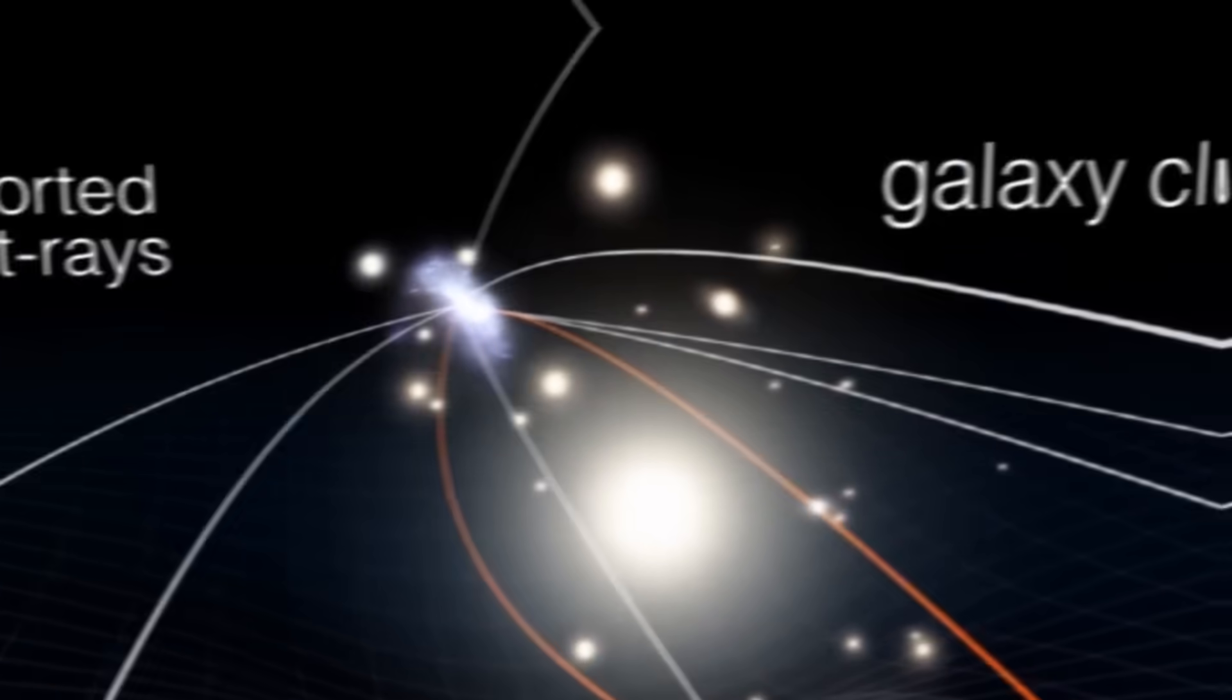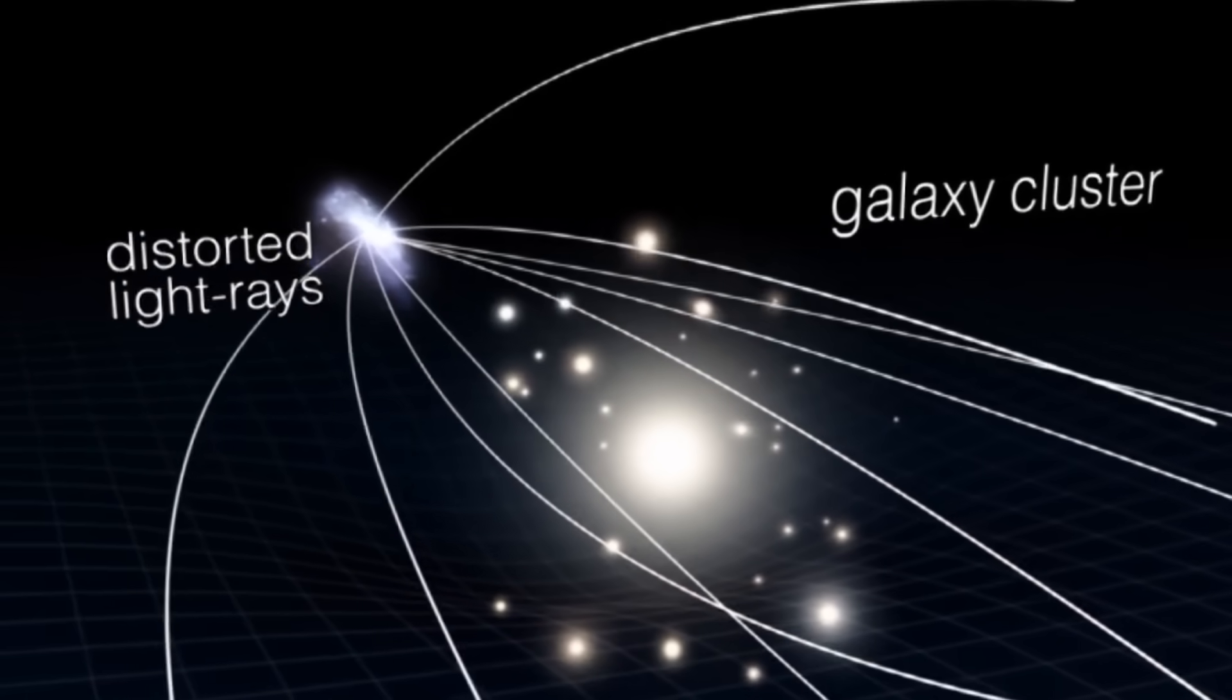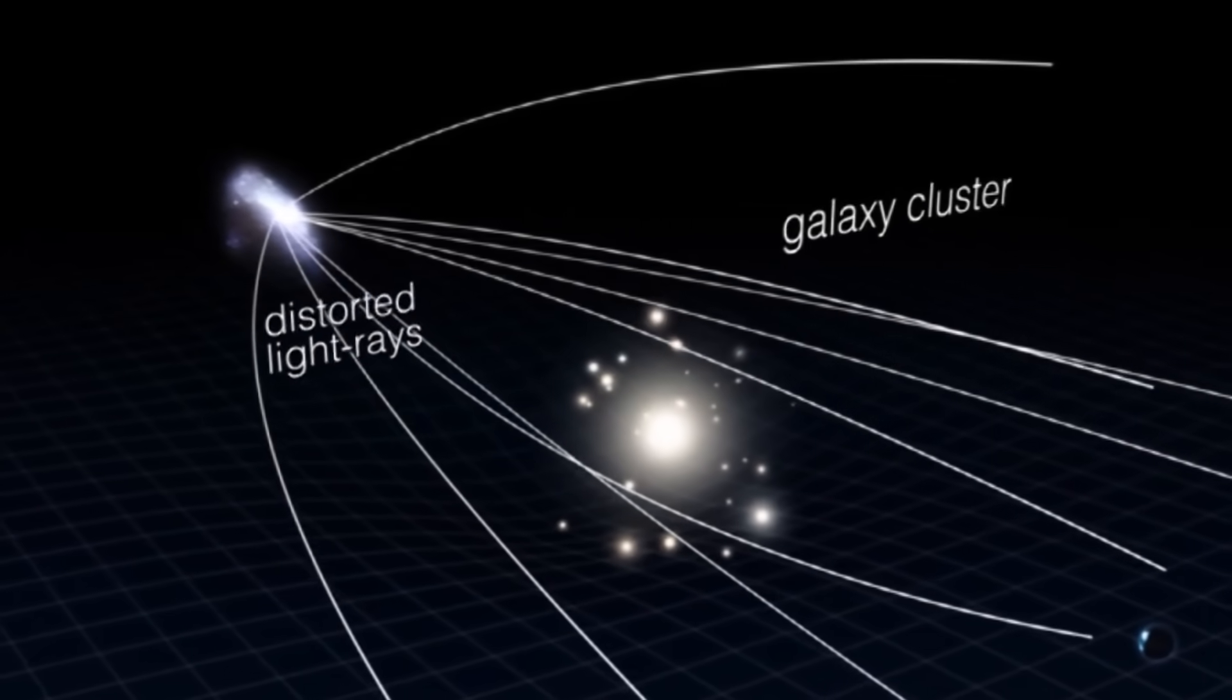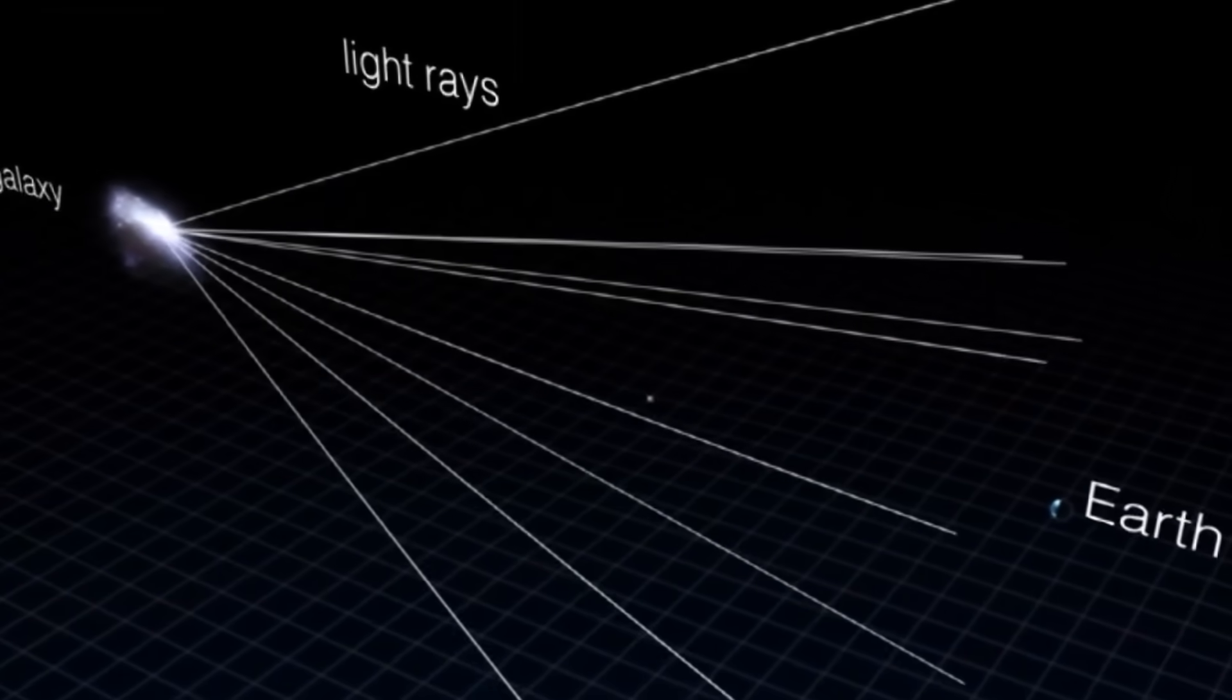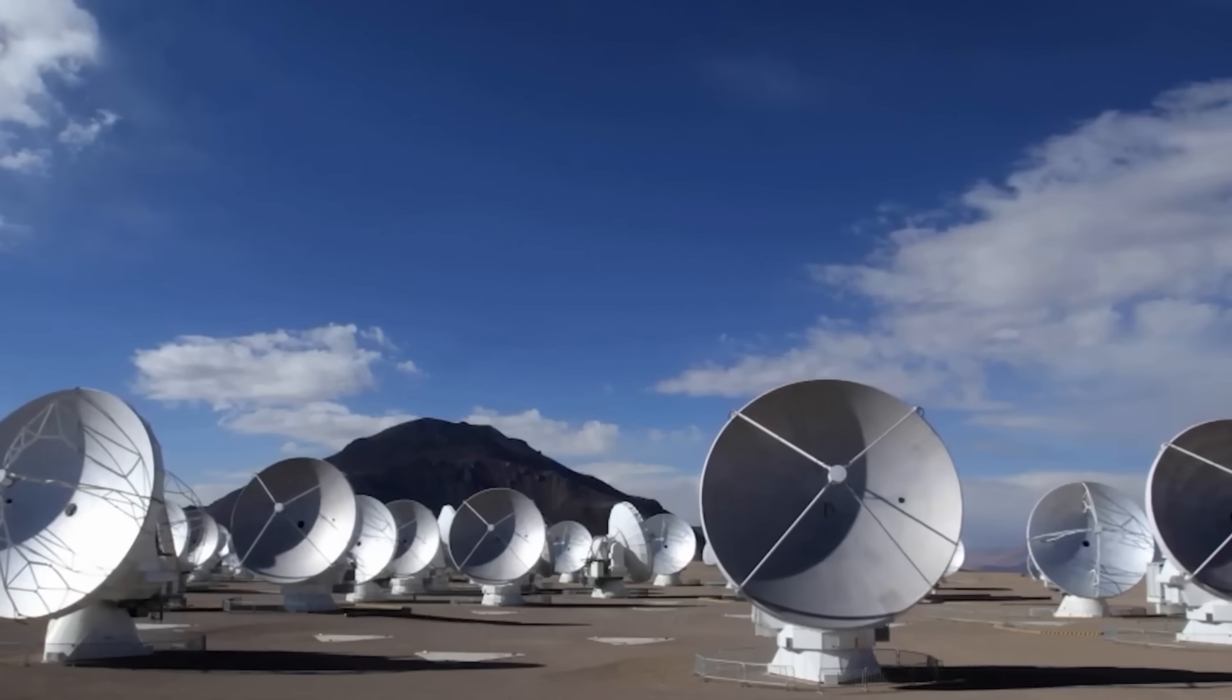To achieve such symmetry, an extraordinary set of cosmic conditions must align: a foreground galaxy with immense mass, a background source perfectly positioned, and just the right curvature of space-time. It's so rare that even seasoned astrophysicists stared at the image in disbelief.